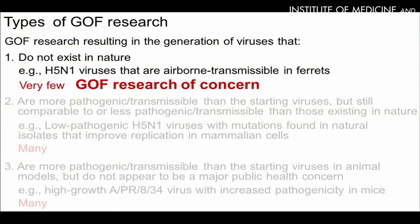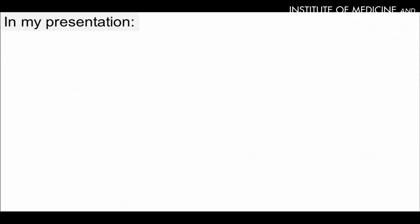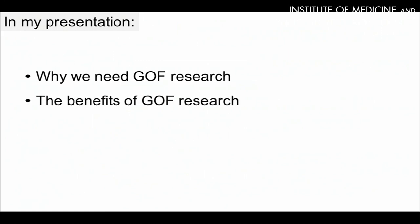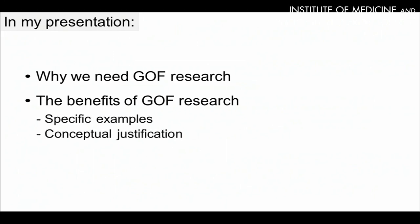The third category is the generation of viruses that are more pathogenic and/or transmissible than the starting viruses in animal models, but do not appear to be a major public health concern. An example is the high-growth PR8 virus, the vaccine backbone virus with increased pathogenicity in mice. In my presentation, I'm going to focus on the first category, which I will call gain-of-function research of concern.